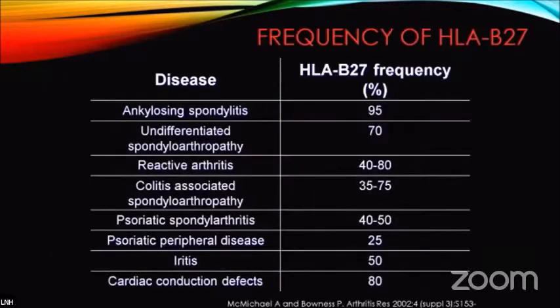The link between HLA-B27 and ankylosing spondylitis is not entirely clear. Almost 95% of patients with ankylosing spondylitis are HLA-B27 positive, but not all HLA-B27 positive patients go on to develop ankylosing spondylitis. That's a very important thing to remember. The different manifestations of the disease also have different rates of HLA-B27 positivity.